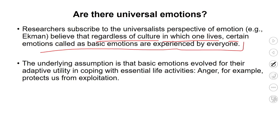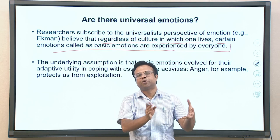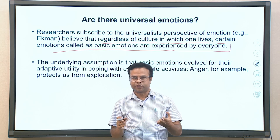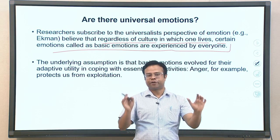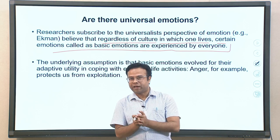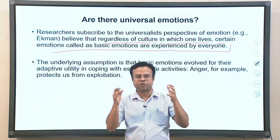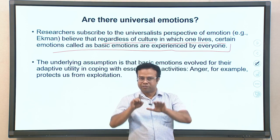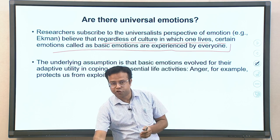The underlying assumption is that basic emotions evolved for their adaptive utility. They are essential for coping with life activities and that is why they are necessary for every human being, evolving across cultures. For example, anger protects us from exploitation — it helps us defend ourselves and fight enemies. This emotion has an evolutionary and adaptive purpose, which is why it is experienced by people in every culture.